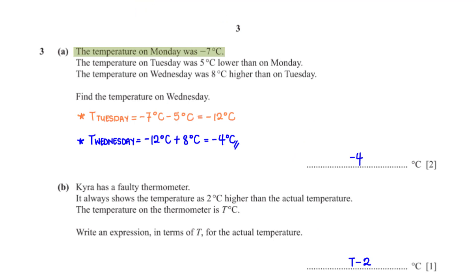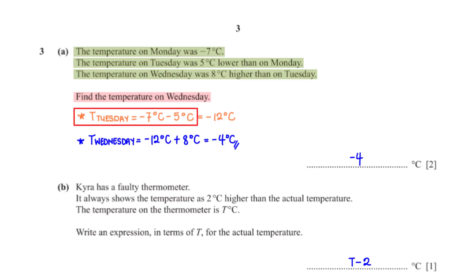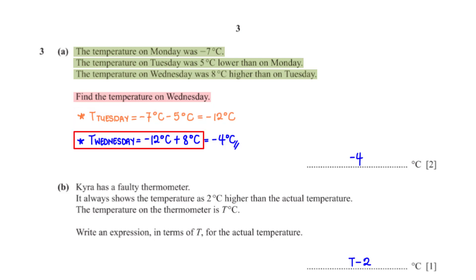The temperature on Monday was −7°C. The temperature on Tuesday was 5°C lower than on Monday, and on Wednesday it was 8°C higher than on Tuesday. To get Tuesday's temperature we subtract 5 from −7, which equals −12°C. To get Wednesday's temperature we add 8 to −12, which equals −4°C.